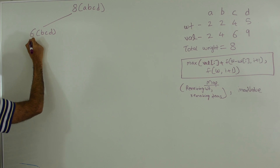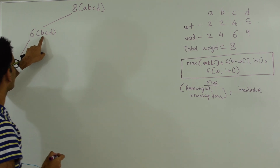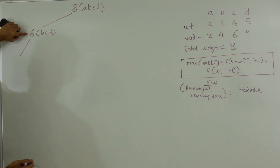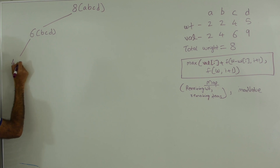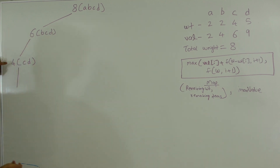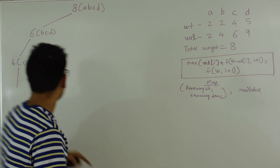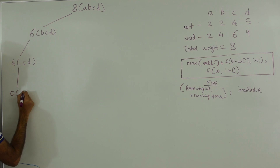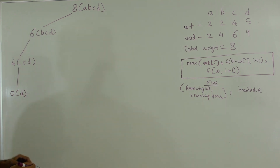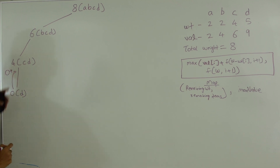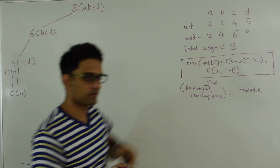Again on the left we pick item B. The weight of B is 2 and our remaining weight is 6, so we're left with weight 4 and items C and D. Subtracting 4 from 4 leaves us 0 weight and item D. If remaining weight is 0 we cannot pick item D, so this returns 0. So if we picked C the best we can get is 0 plus the value of C which is 6.